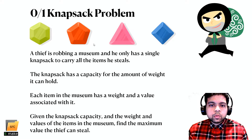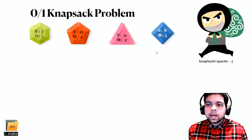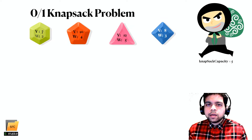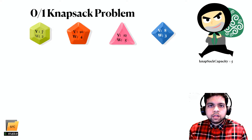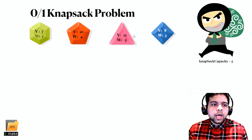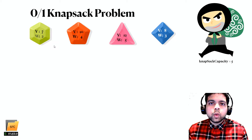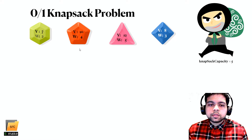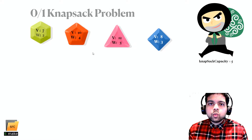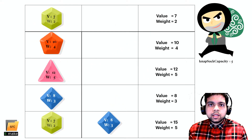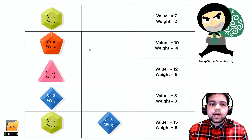Looking at a specific example, our thief has a knapsack capacity of 5 — meaning he can hold 5 pounds worth of items. The museum has 4 gems, each with a certain value and weight. For example, one gem could be worth $7 and weigh 2 pounds. We want to find the combination of gems the thief can steal to get the maximum value.